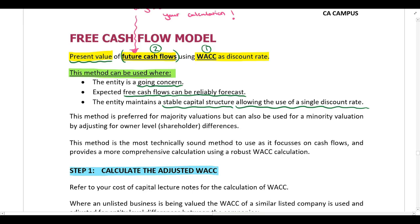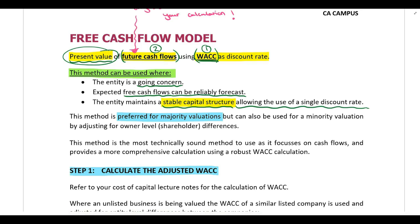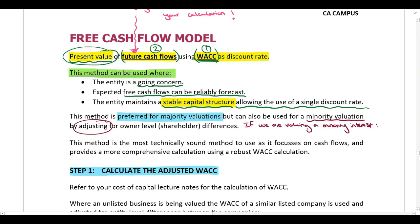Lastly, the company must have a stable capital structure allowing the use of a single discount rate. We use the WACC as our single discount rate when calculating present value, so the company must have a stable capital structure. This model is preferred for majority valuations — valuing a controlling interest — however it can also be used for a minority valuation, but then we need to adjust for owner-level or shareholder differences, and we will need to deduct a minority discount.